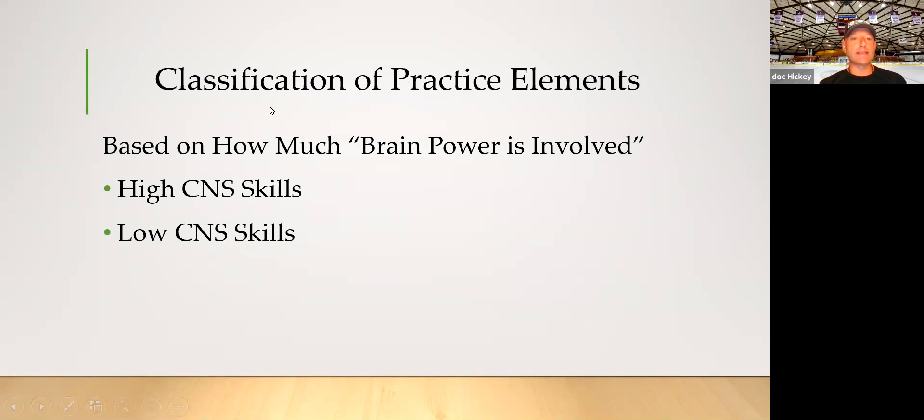In terms of our practice elements, I like to classify practice elements as either high CNS or low CNS. High CNS, how much brain power is involved? A high CNS skill is going to involve a lot of brain power. A low CNS skill is going to involve not a lot of brain power. When we think about high CNS skills, those are going to be speed, agility, quickness, accuracy. In terms of looking at lacrosse, when we're doing a metabolic cash out at the end of practice and we're going to run a rack, that's going to be a low CNS skill. There's not much decision-making going on in terms of the CNS.